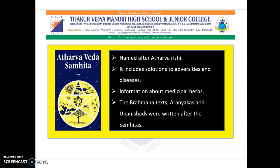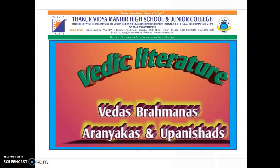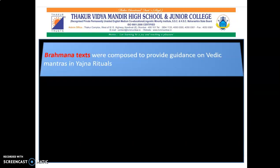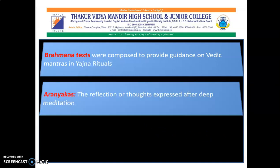After the four Vedas, the next texts are the Brahmana texts, Aranyakas, and Upanishads, which were written after the Vedas or Samhitas and are also included in Vedic literature. Brahmana texts were composed to provide guidance about how to use the Vedic mantras in Yajna rituals, and each Veda has its own Brahmana texts. Aranyakas are scriptures that focus more on meditation rather than sacrifices, written by rishis who lived in forests and expressed their deep meditative thoughts and experiences.